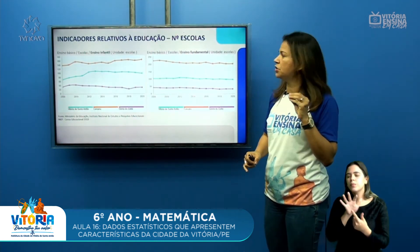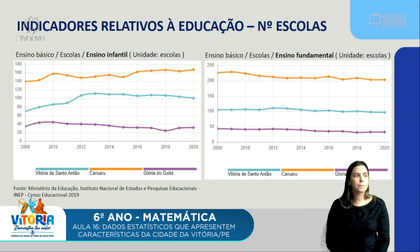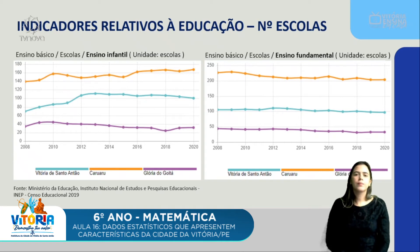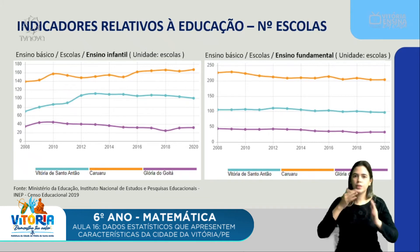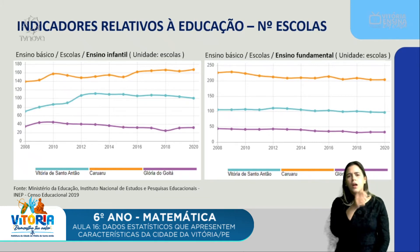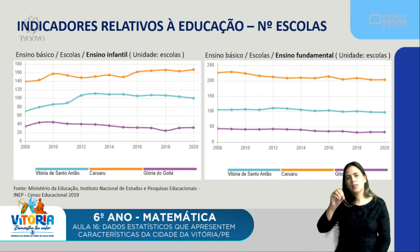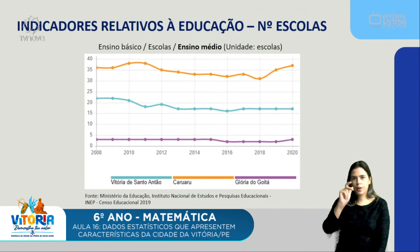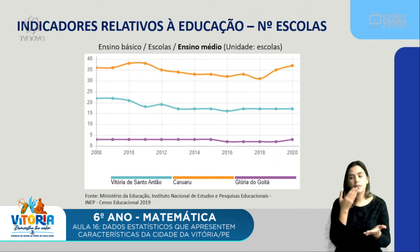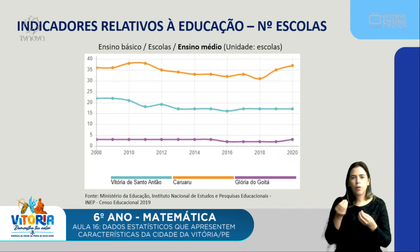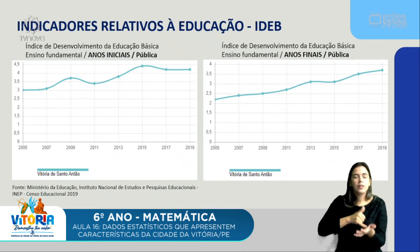Um outro indicador relativo à educação é sobre o número de escolas. No ensino infantil, o número de escolas foi aumentando de aproximadamente 70 até quase 100 escolas em 2020. Já no ensino fundamental, Vitória se mantém numa média próxima a 100 escolas, do primeiro ao nono ano. Já no ensino médio, as escolas eram 27 e caíram hoje para 17 escolas. Assim como a grande concentração de alunos matriculados está no ensino fundamental, a quantidade de escolas precisa atender essa demanda.